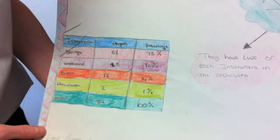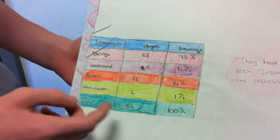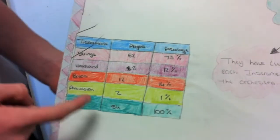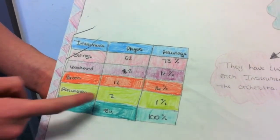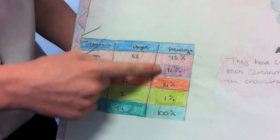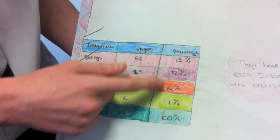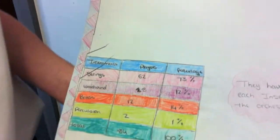The same information from the pie chart, but in a different way. The strings are 62 players, the woodwind 8, the brass 12, and percussion 2. The percentages are 73%, 12%, 14%, and 1%.